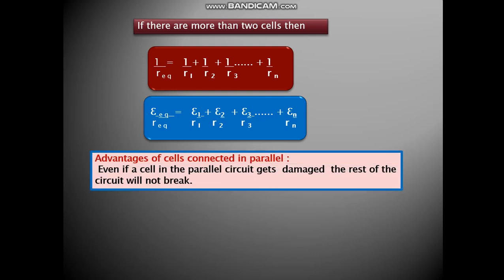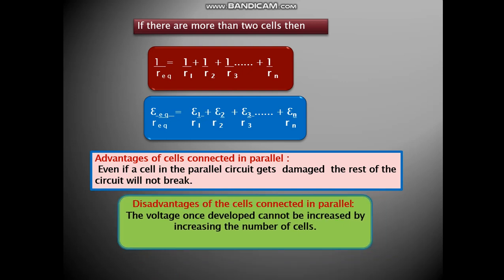Advantages of cells connected in parallel is even if a cell in the parallel circuit gets damaged, the rest of the circuit will not break. It will keep on working. The disadvantages are when cells are connected in parallel, the voltage once developed cannot be increased by increasing the number of cells.